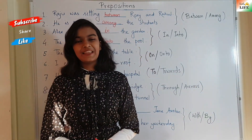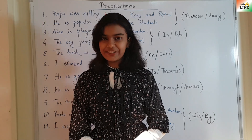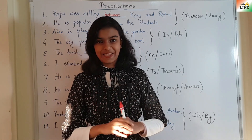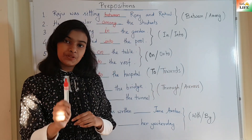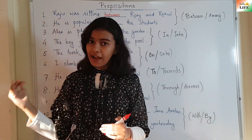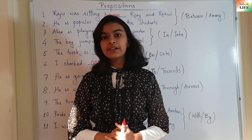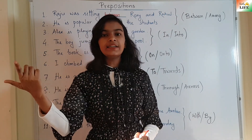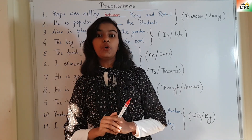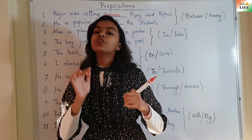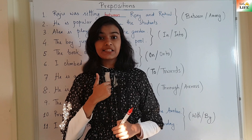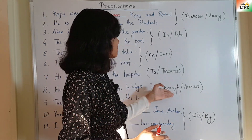Now let's move to: 'through' and 'across'. They might sound almost the same, but they have a difference. 'Through' is used when we talk about something that passes through a closed space. 'Across' is used when we talk about a surface. I swam across the river — the river is a surface, so we use 'across'. But the mouse ran through the hole — the hole is a closed space, so we use 'through'. I swam across the river, but the mouse ran through the hole.